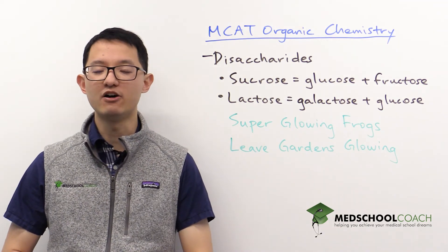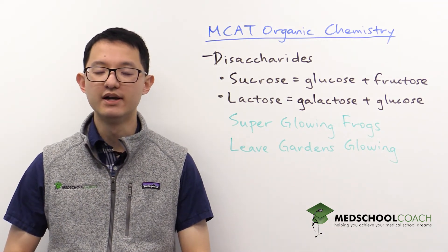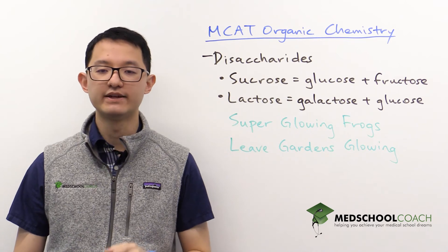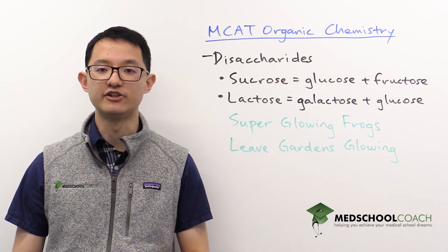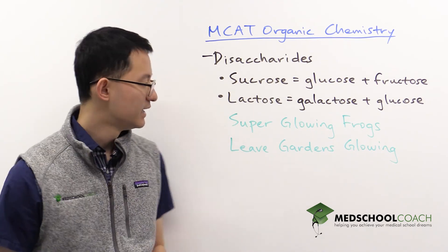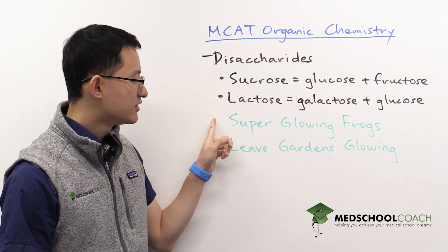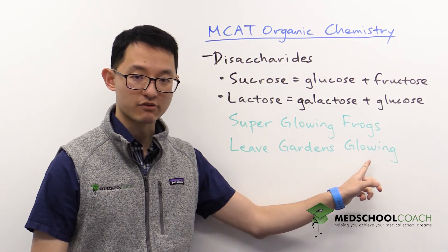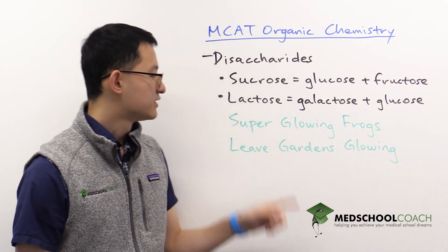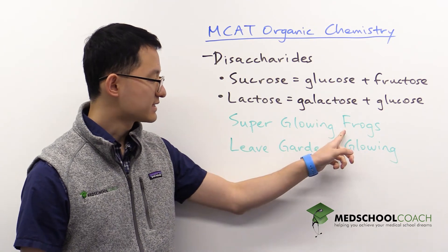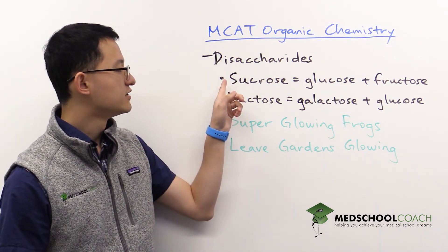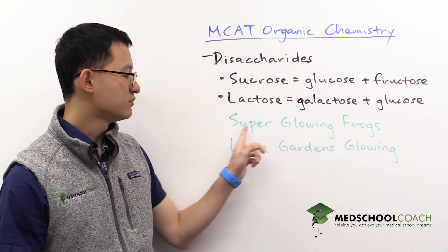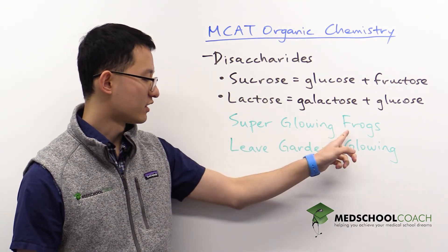Our mnemonic today is going to help you remember what these two disaccharides are made of in terms of their monosaccharide units. The mnemonic is: super glowing frogs leave gardens glowing. Super glowing frogs is for sucrose, glucose, and fructose.